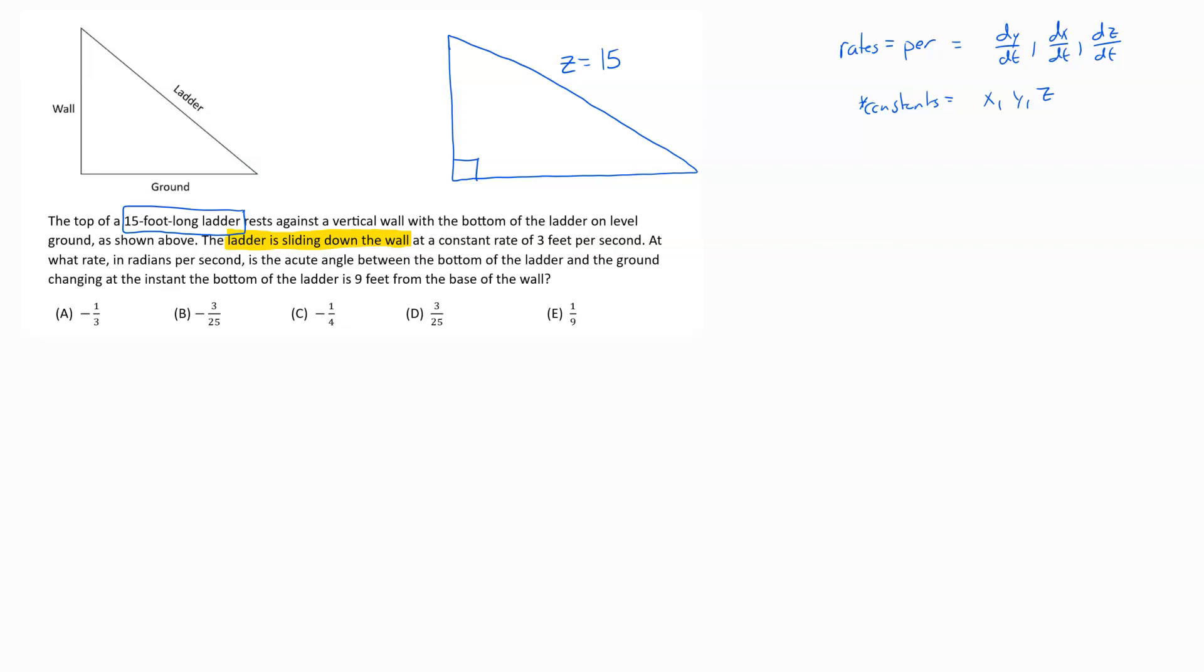Then it tells us that the ladder is sliding down the wall at a constant rate of 3 feet per second. So I see that word rate, so I know I'm talking about a derivative piece. It's talking about how this side is moving down, so we're talking about a change in what I would say is the y direction. The change in this direction is going down, so it's decreasing. That y side is decreasing, so implied in that is that this would be a negative 3.